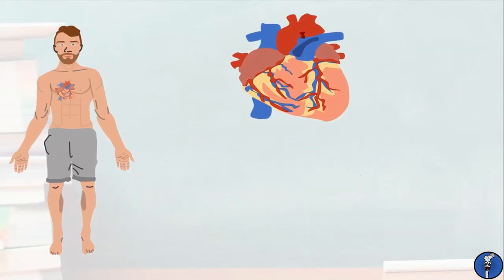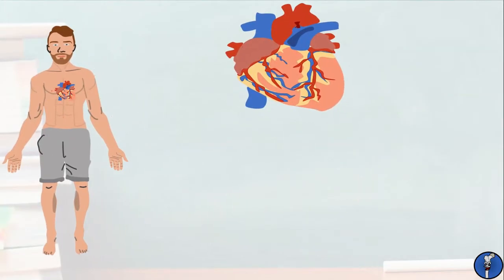When discussing veins, we need to remember the direction of blood flow. Whilst arteries start nearer to the heart and branch as they move away from it, veins start in your peripheries and join one another as they move closer to the heart. Bear this in mind, as this is the terminology I'll be using throughout the rest of this tutorial.